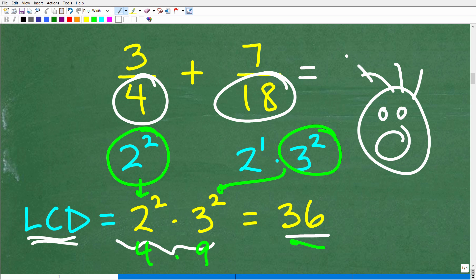So hopefully you know how to find the LCD because you won't be able to do mathematics at the middle school level or beyond. It's kind of not that difficult to do. But anyway, so let's move on. So the LCD is 36.